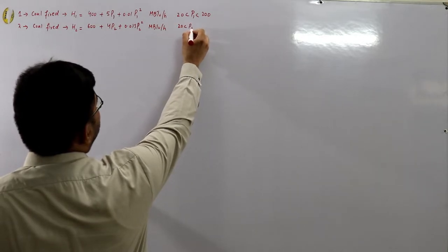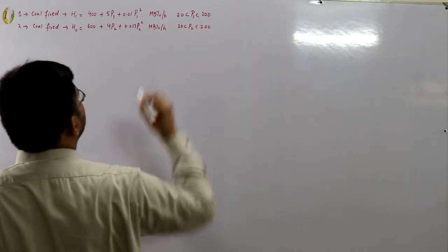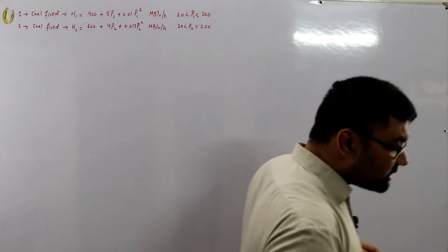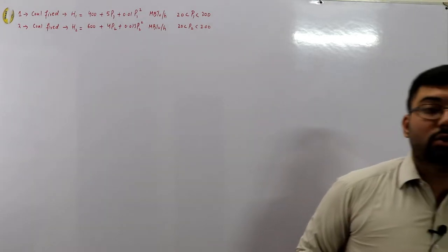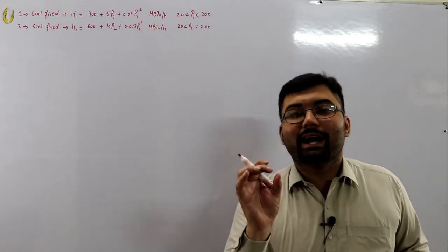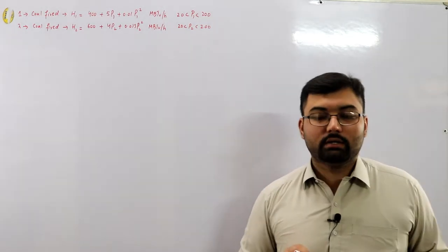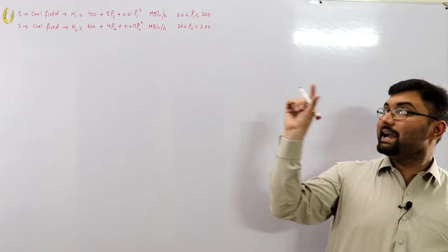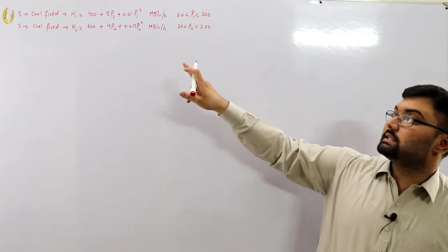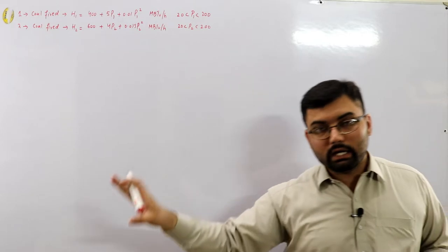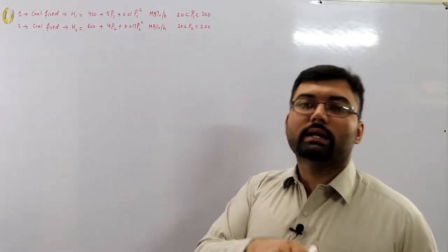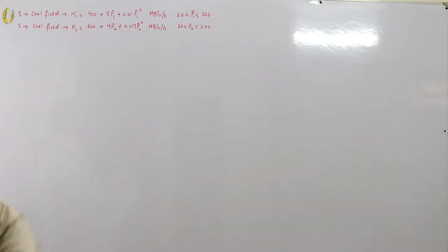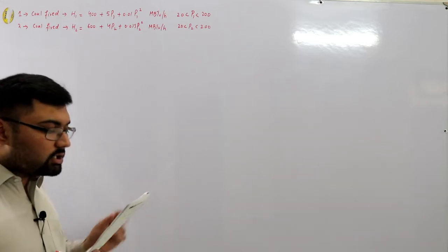For the calculations, we need the objective function f, which is f = h × x, where h is the heat equivalent and x is the cost of the fuel. Let me complete the question first, then come to this.